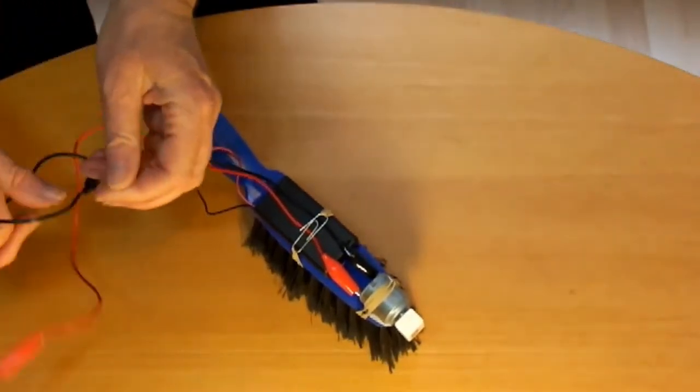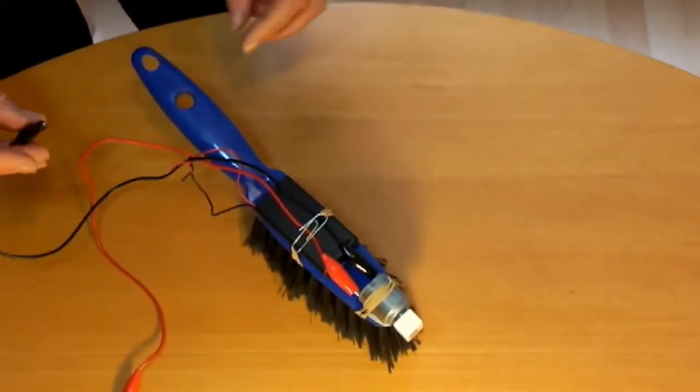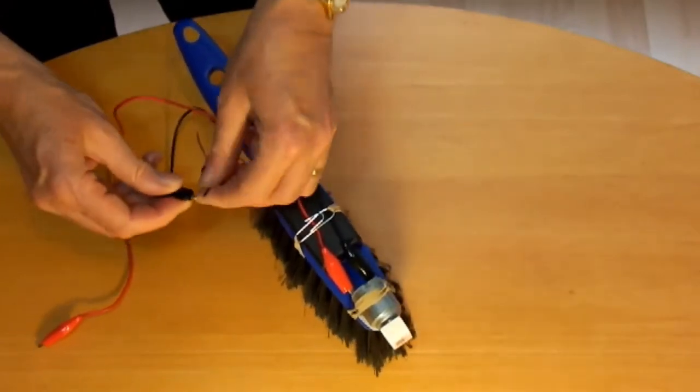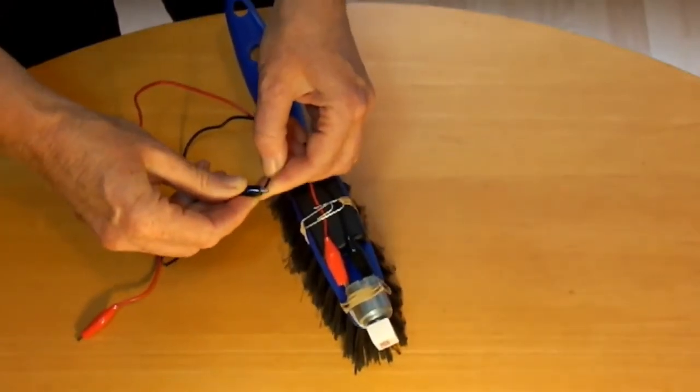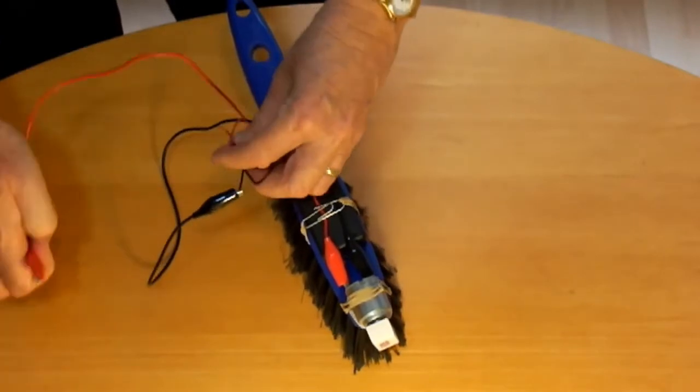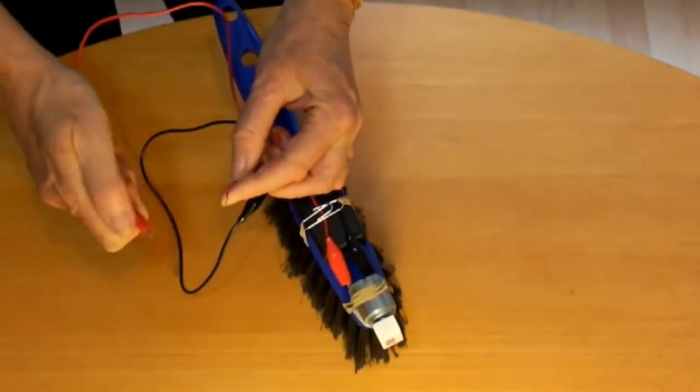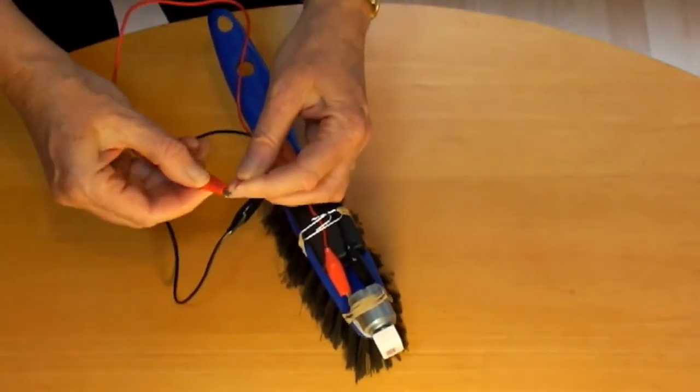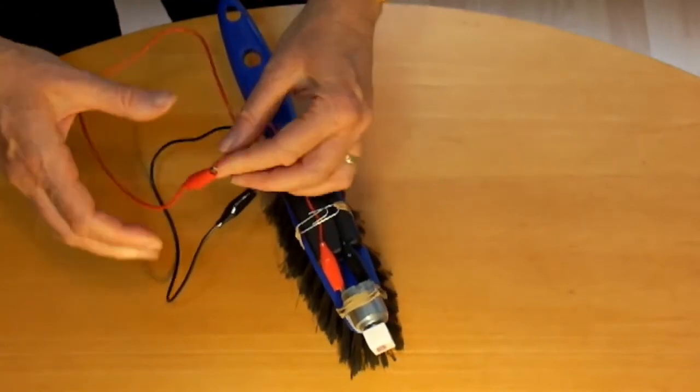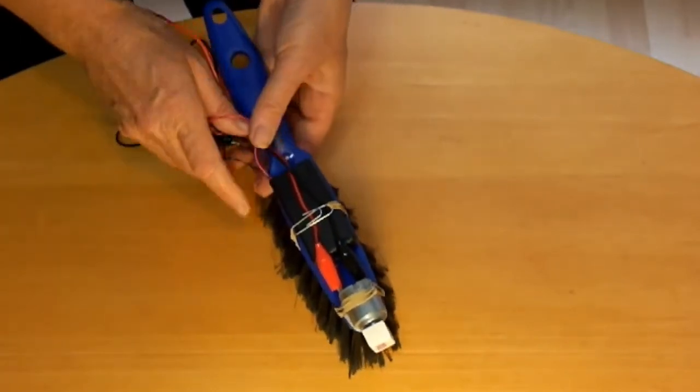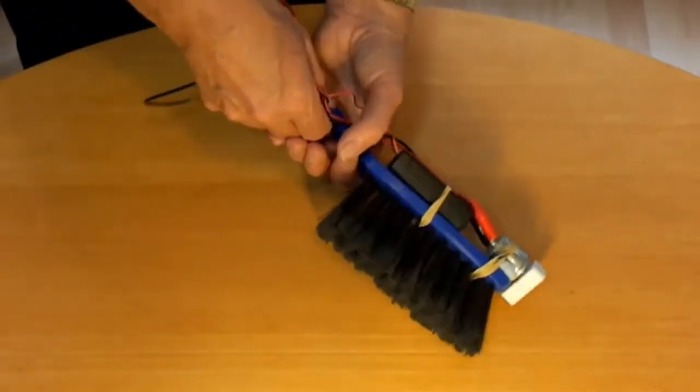Clip the other ends of the two crocodile leads onto the metal ends of the two wires from the battery box. Fold the wires up neatly and use the third rubber band to hold them in position.